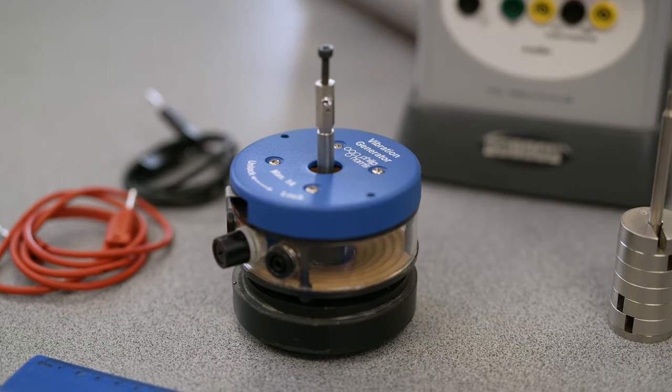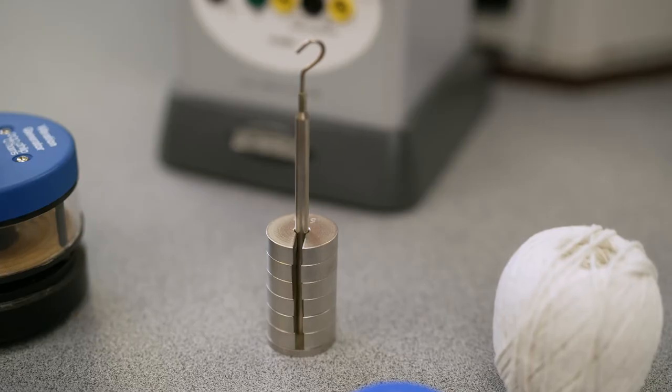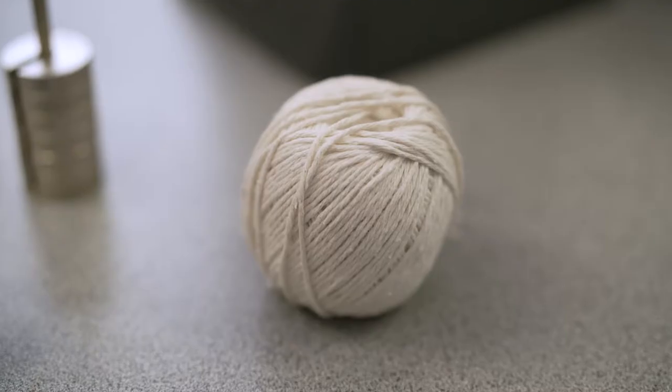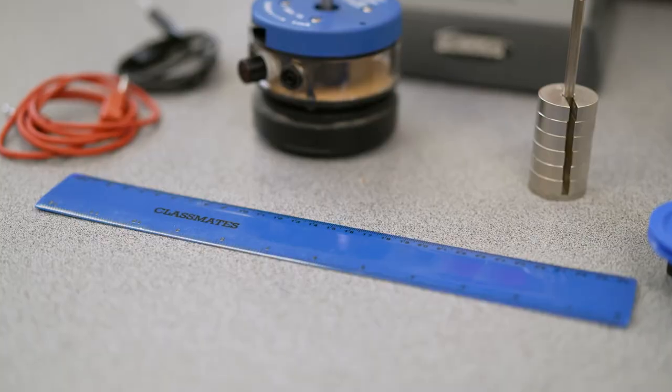A vibration generator by Philip Harris, 4mm electrical leads, slotted masses, string or elastic cord, a table pulley clamp, and a 30cm ruler.